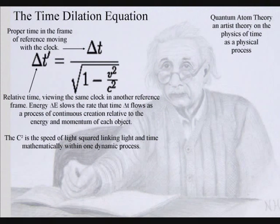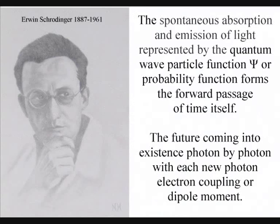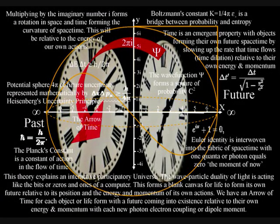This geometrical process can be expressed mathematically, with the spontaneous absorption and emission of light, represented by the probability function, or quantum wave-particle function. In this theory, the mathematics of quantum mechanics represents the physics of time, as a physical process.